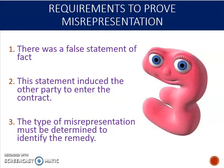In order to prove that there's been a misrepresentation, we have to prove three requirements. Firstly, there must have been a false statement of fact. Secondly, this statement induced the other party to enter the contract. And thirdly, the type of misrepresentation has to be determined. There are three types of misrep: innocent, negligent, and fraudulent. The type of misrep is important because it helps us determine what remedies are available to the claimant.